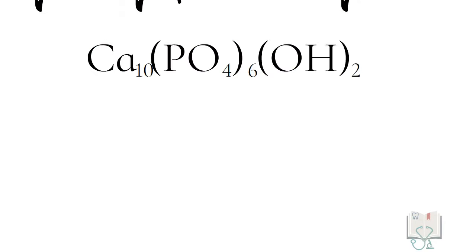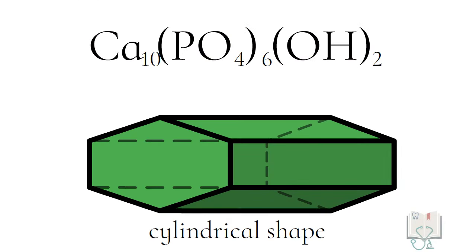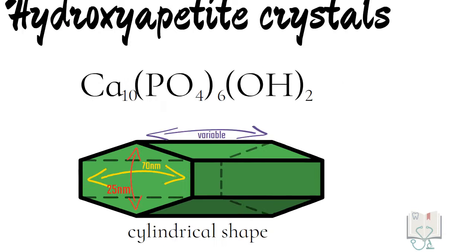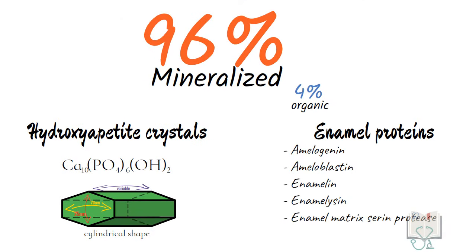The mineralized portion is formed of hydroxyapatite crystals which are cylindrical in shape with a hexagonal cross-section. They are about 70 nanometers wide, 25 nanometers thick and have a variable length, whereas the organic part is made by various enamel proteins.